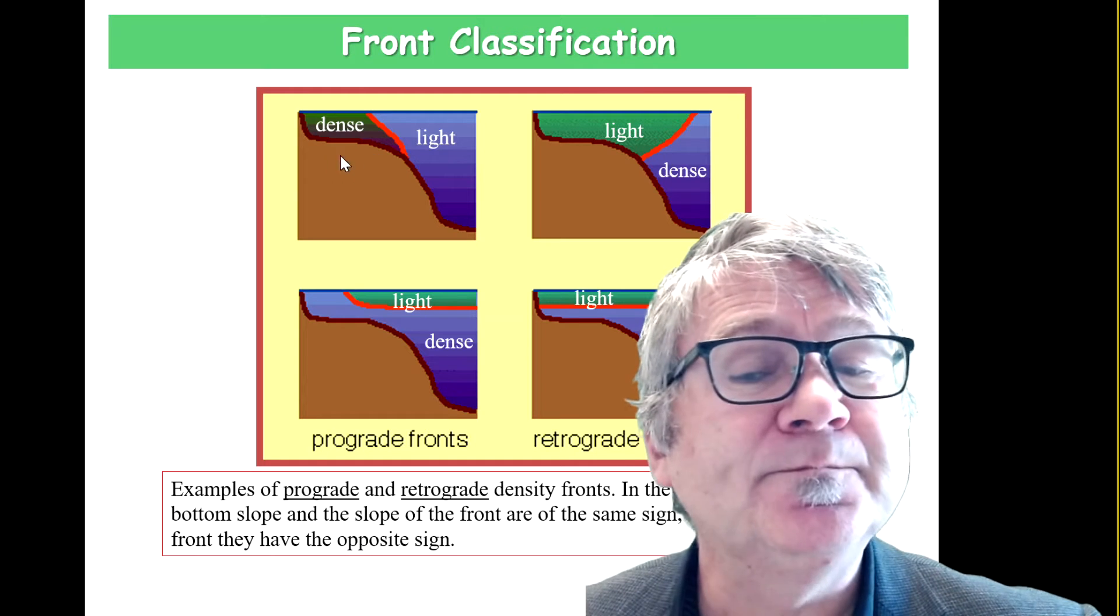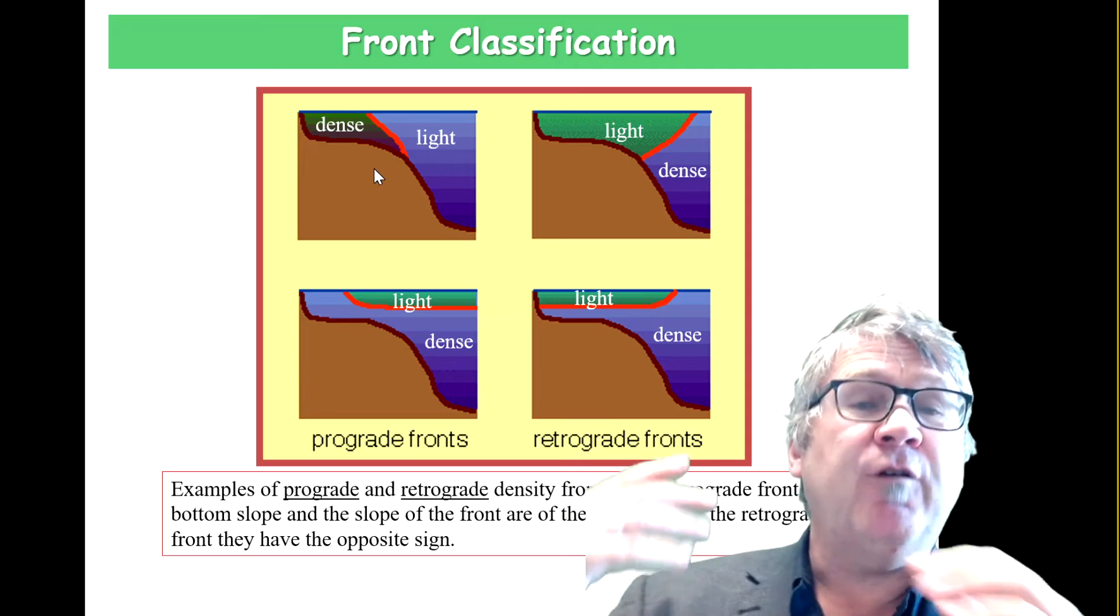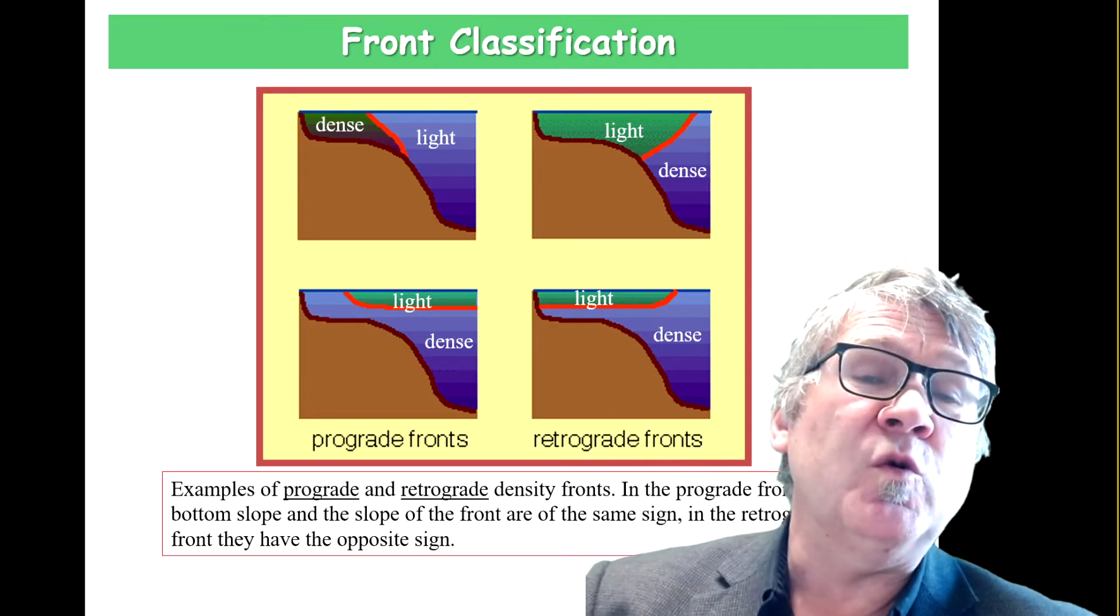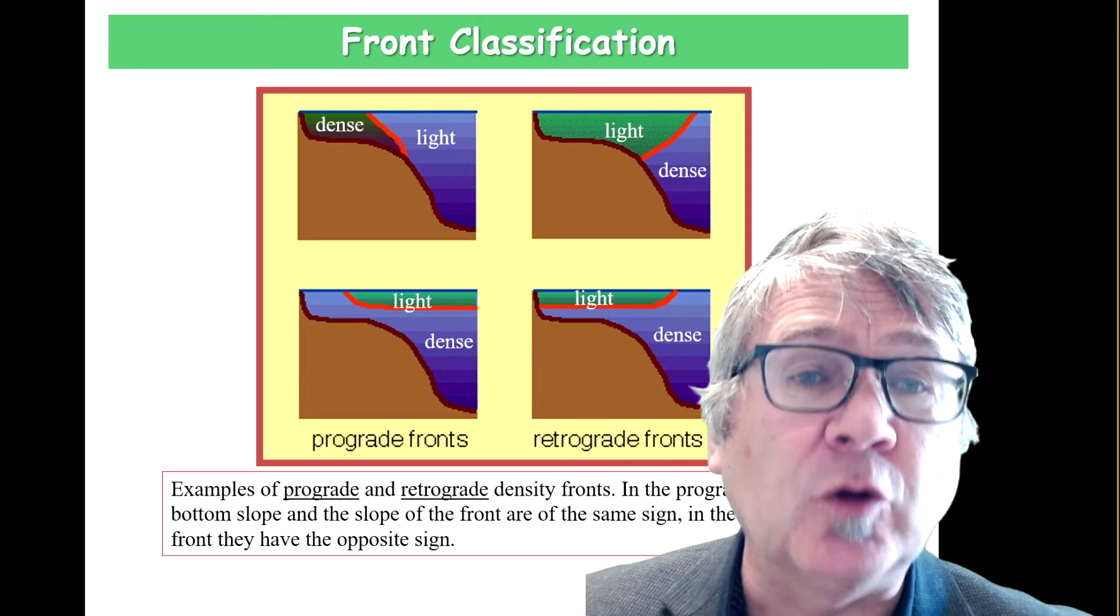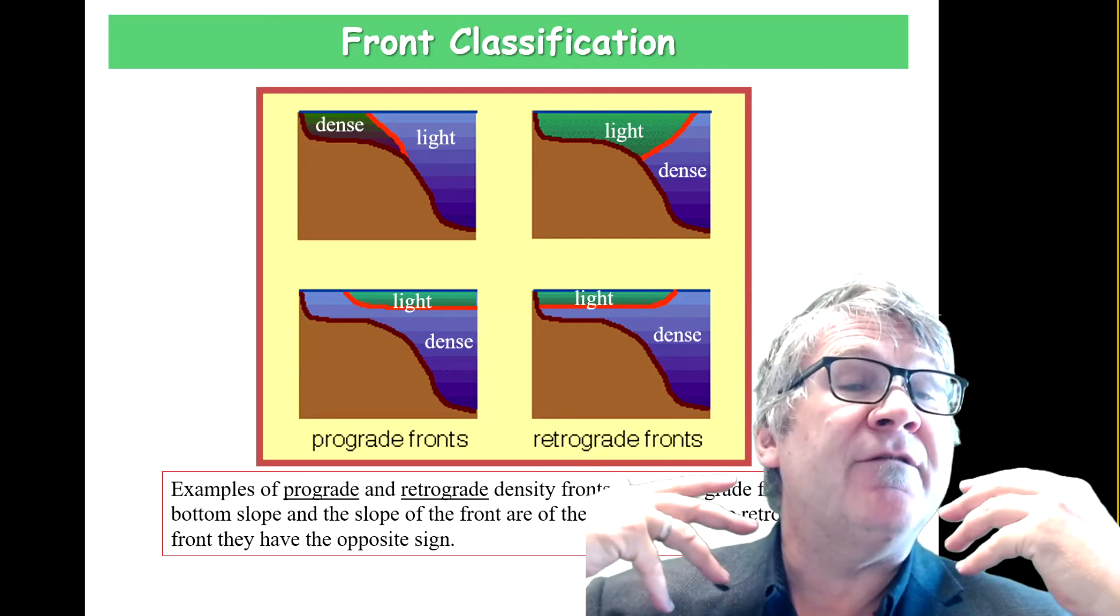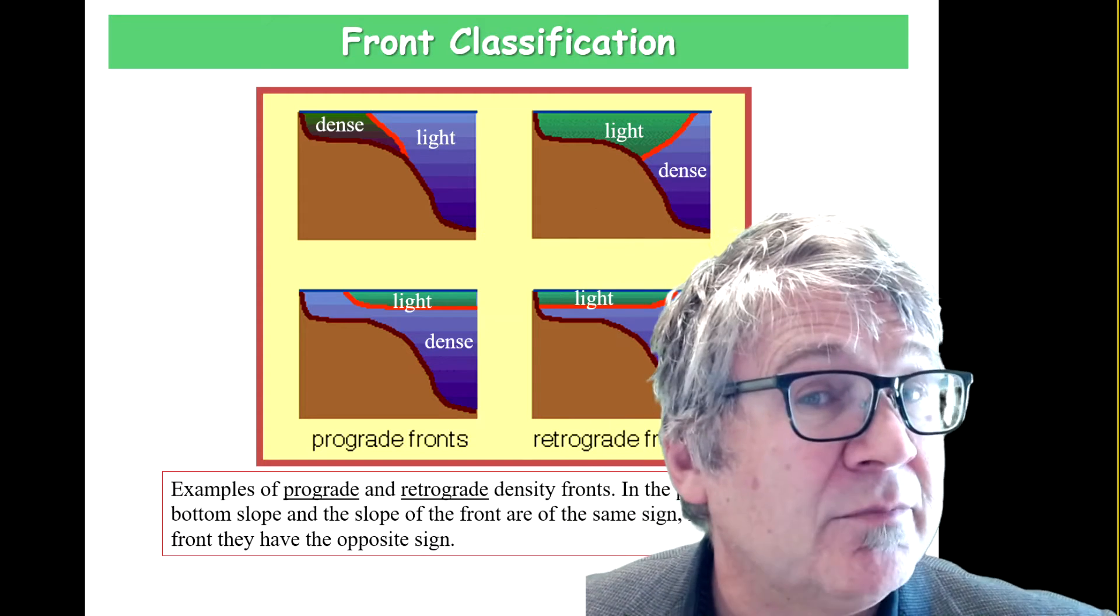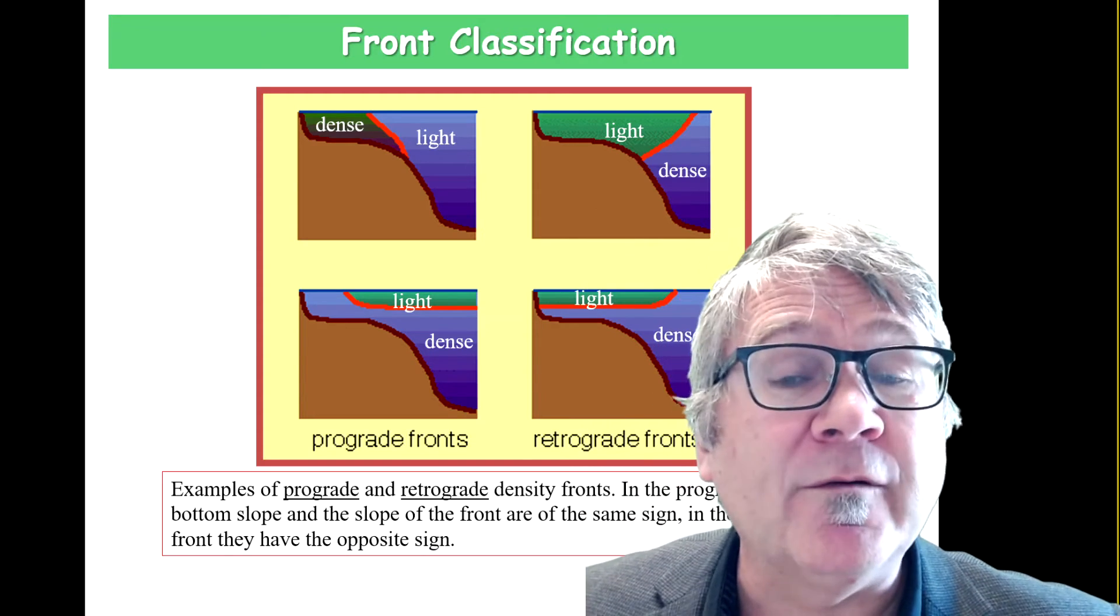On the left side we have situations where we have dense water. Dense water can be created, for example, through the release of salt brines when you form new ice, or you have cooling events. You can produce denser shelf water.